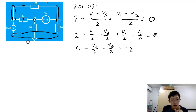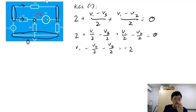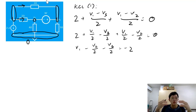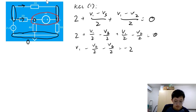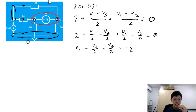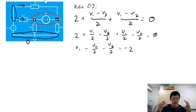Now this is the tricky bit. It might be tempting to write a KCL equation at V2, but the problem is V2 is directly connected to this voltage source. We cannot express the current through a voltage source using Ohm's law. So we must use a supernode that captures the voltage source and its two terminals. We draw a bubble around the voltage source and its two terminals, and write KCL for the entire supernode.